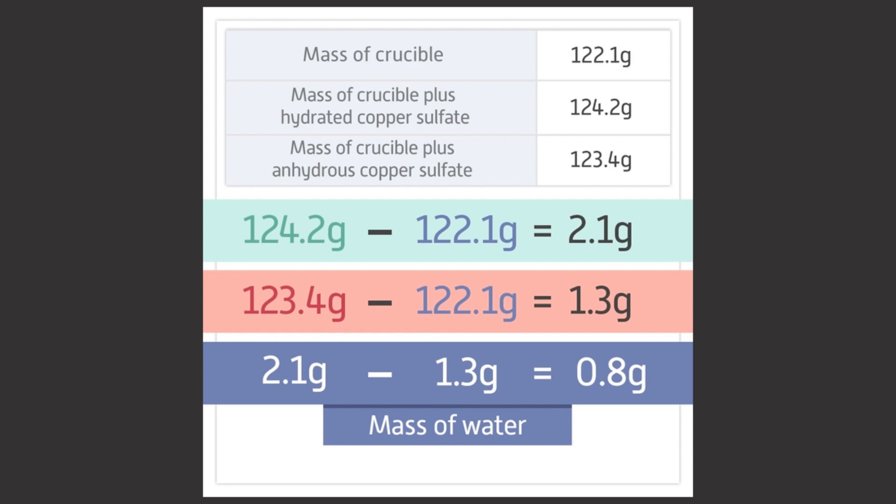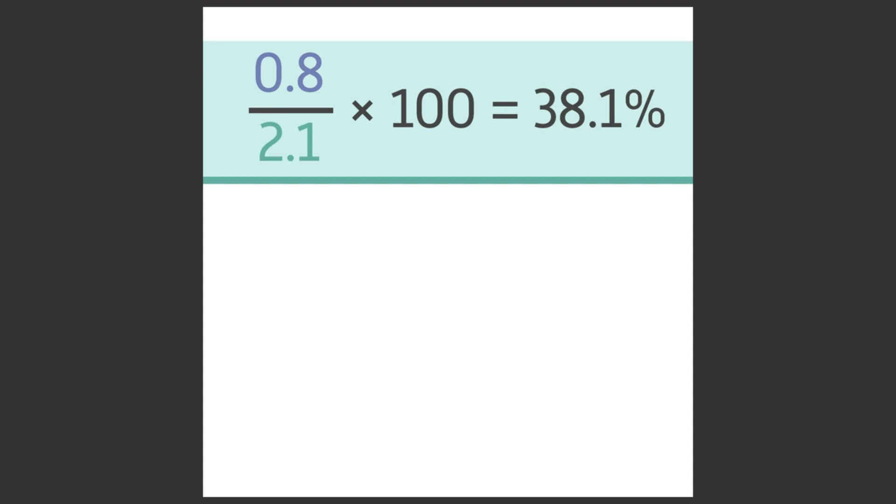Finally, to calculate the percentage of water in the hydrated copper sulfate, you need to do this calculation: the mass of water divided by mass of hydrated copper sulfate multiplied by 100. The answer is 38.1 percent.